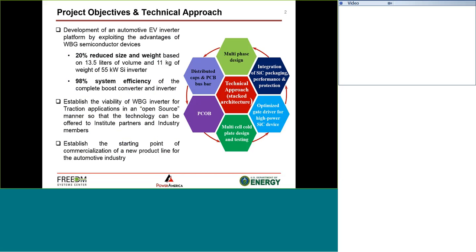So the project objectives and the approach: in the first year of the project, we were tasked to develop a 55 kilowatt silicon carbide inverter. In the second year, we are enhancing that into a 100 kilowatt inverter. The objective is to achieve 20 percent reduced size and weight based on 13.5 liters of volume and 11 kilograms for the 65 kilowatt inverter.